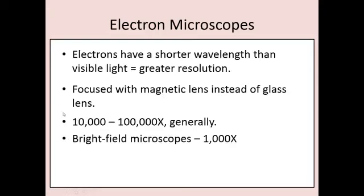And generally, we can magnify from about 10,000 to 100,000 times, generally. Bright-field microscopes, we stop at about 1,000. So you can see, we can look at things that are much, much smaller with electron microscopes.